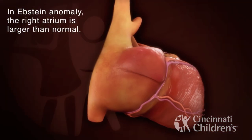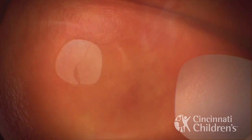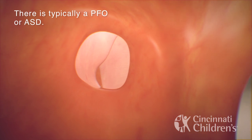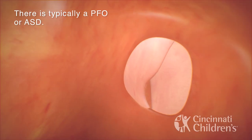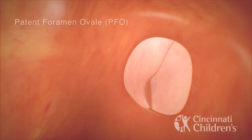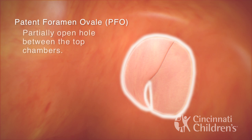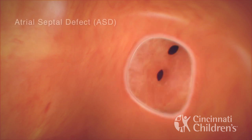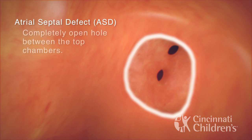In Ebstein Anomaly, the right atrium is larger than normal. There is typically a PFO or ASD. Patent foramen ovale, or PFO, is a partially open hole between the top chambers. Atrial septal defect, or ASD, is a completely open hole between the top chambers.